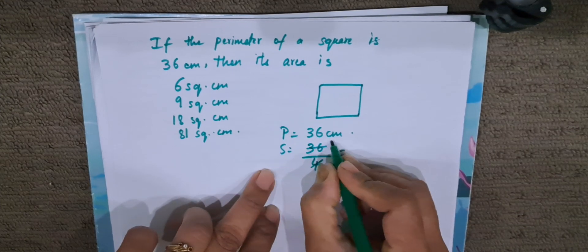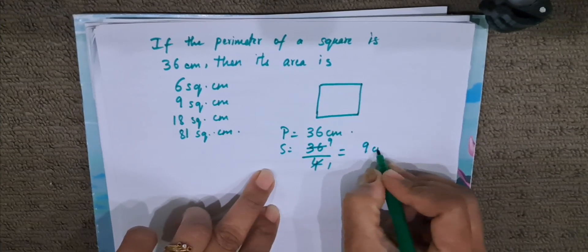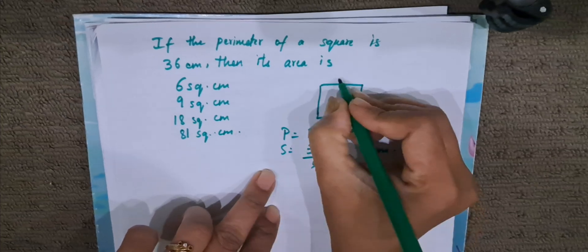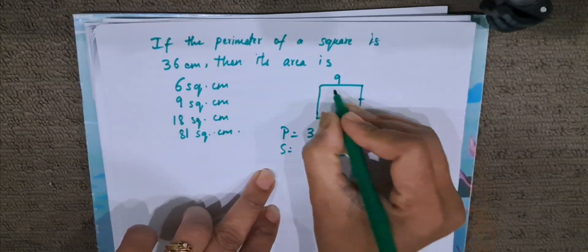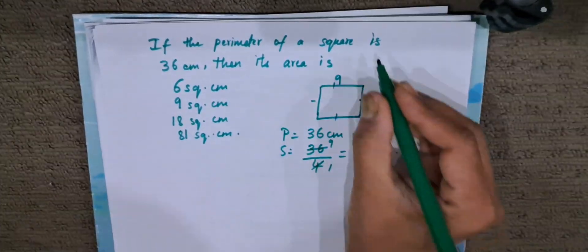4 ones are 4, 4 nines are 36. So 9 cm is the sides of this square. All sides are equal and it is 9 cm.